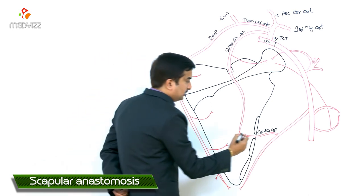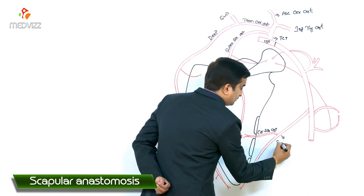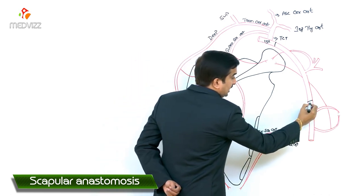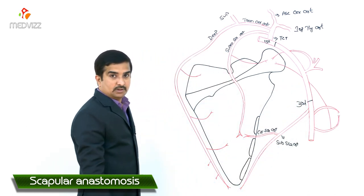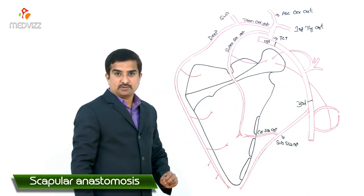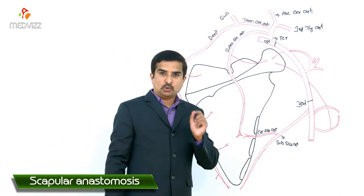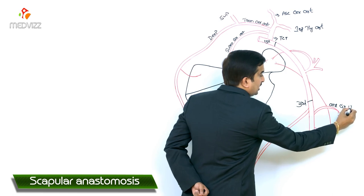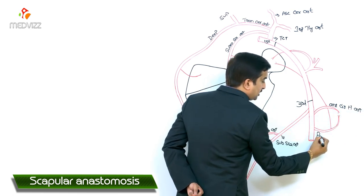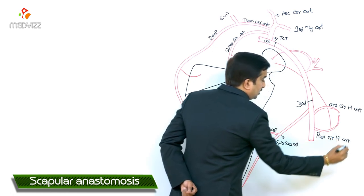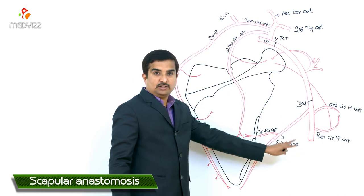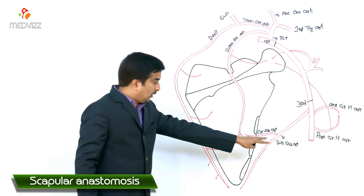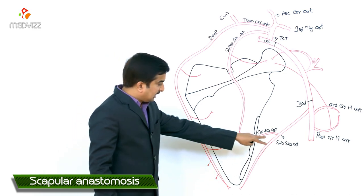Along with these, there is another artery called the circumflex scapular artery. The circumflex scapular artery is a branch of the subscapular artery, which arises from the third part of the axillary artery. The third part of the axillary artery gives off three branches: the anterior circumflex humeral artery, the posterior circumflex humeral artery, and the subscapular artery.